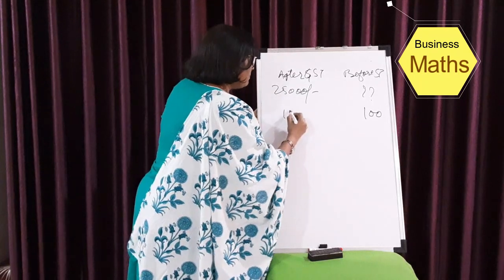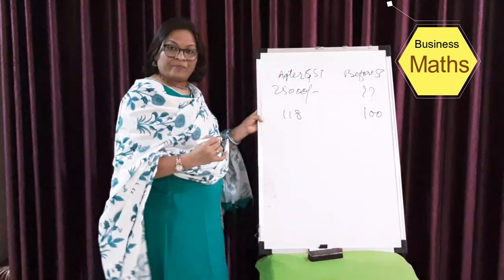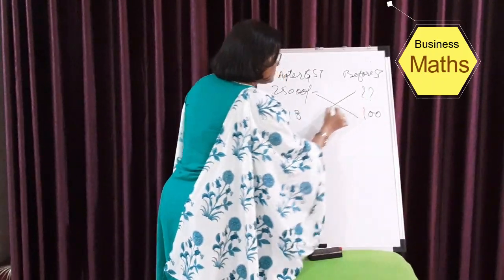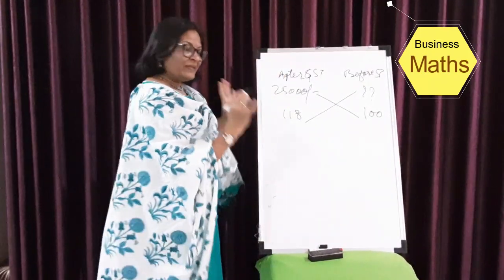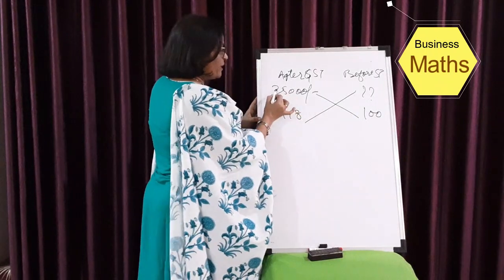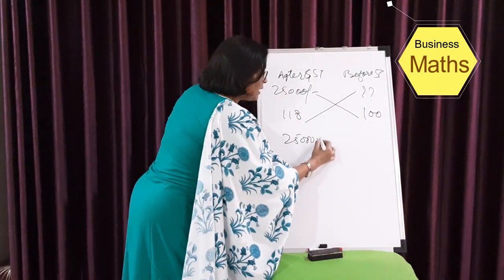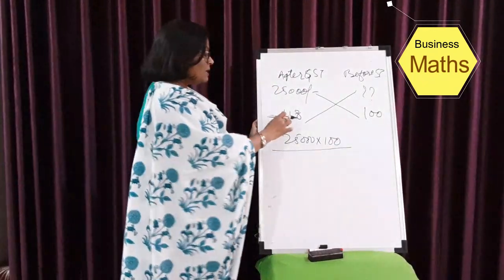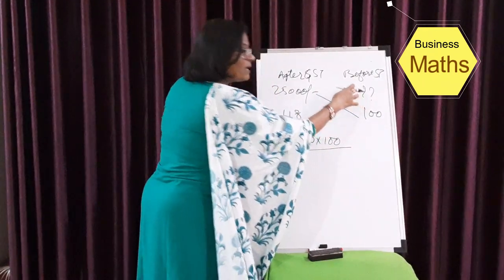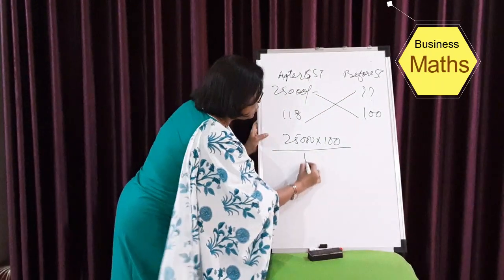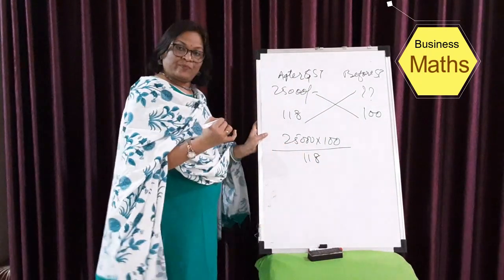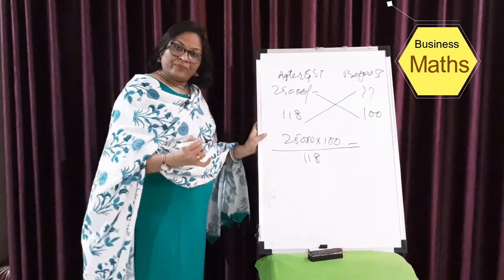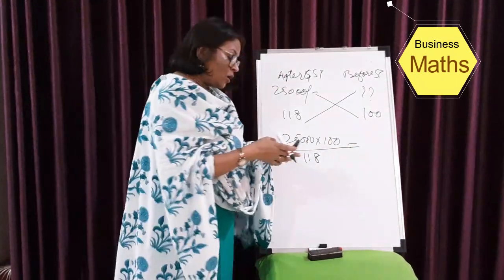What we do is cross-multiply. The complete, known values go into the numerator — that is 25,000 multiplied by 100 — and the incomplete factor, which is 118, goes below. The value you get is your before-GST value.